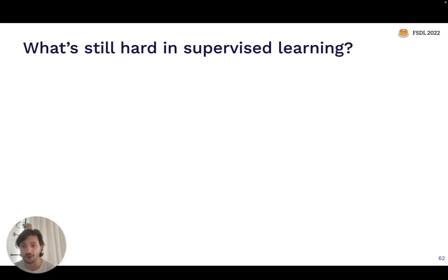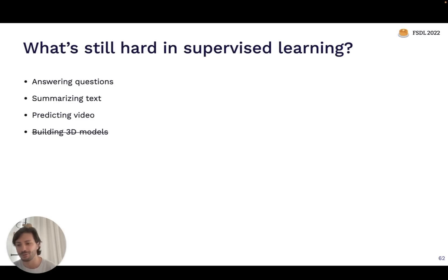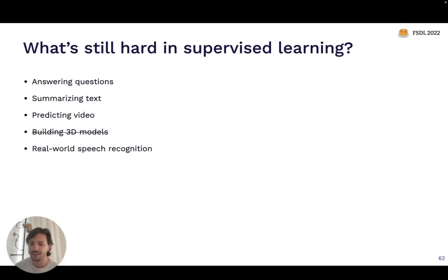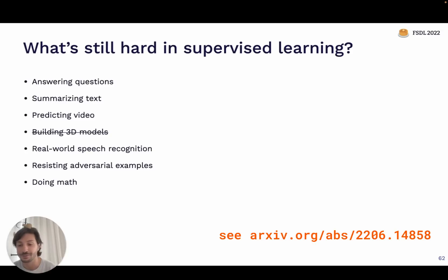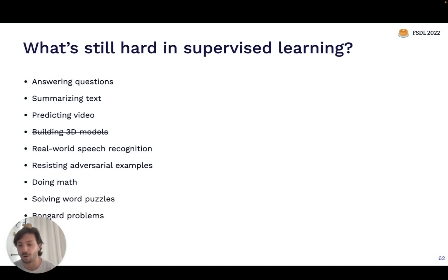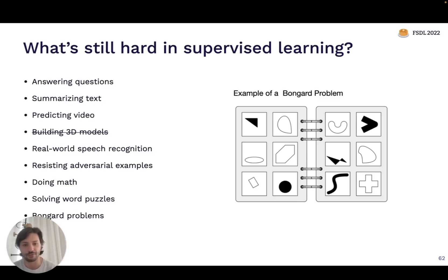Can we reason about what types of problems are still difficult? One type is where the prediction or output of the model is a complex or high-dimensional structure, or where it's ambiguous. For example, 3D reconstruction: the 3D model you're outputting is very high-dimensional. Video prediction: not only high-dimensional but also ambiguous — just because you know what happened for the last five seconds, there are still infinite possibilities for what comes next. Dialogue systems: very ambiguous, very open-ended. A second category is problems where you really need the system to be reliable — machine learning systems fail in unexpected and hard-to-reason-about ways. High precision or robustness requirements make problems more difficult.